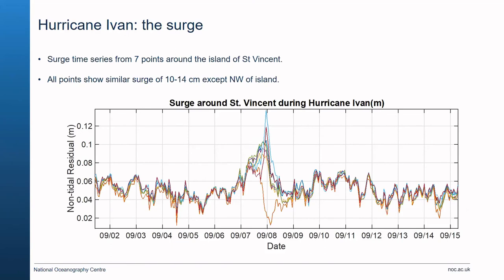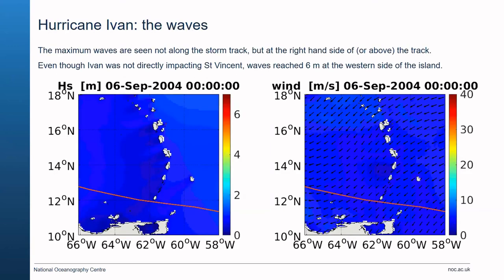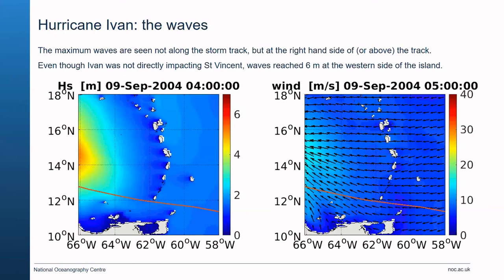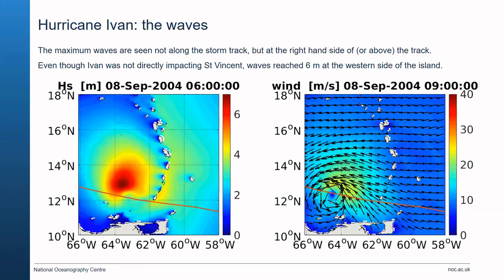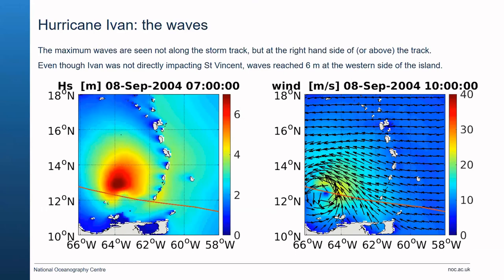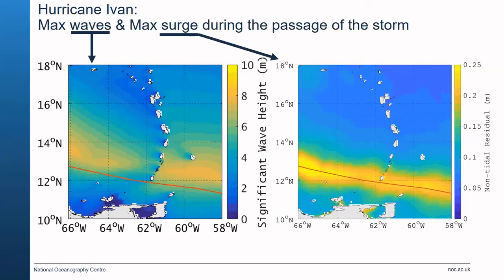Time series were extracted at seven points around St Vincent, all showing a similar peak in surge conditions between 10 to 14 centimetres, giving an idea of the actual measure of surge around the whole island. The wave model shows maximum waves don't propagate directly underneath the storm track but to the right — or above — the storm track. Even though Ivan was not directly impacting St Vincent, waves could reach six metres at the western side of the island. Plotting maximum conditions throughout this period shows surge was strongest under the track while waves were higher to the north, impacting the western edge of the islands.